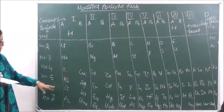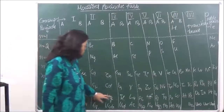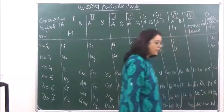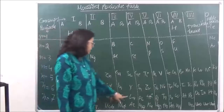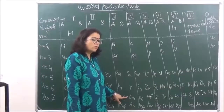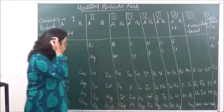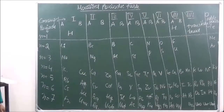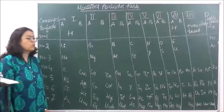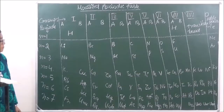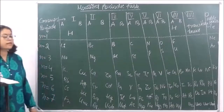The sixth period has 32 elements — 18 in the main table plus 14 f-block elements placed below — and is known as a very long period. The seventh period is not complete; it only goes up to atomic number 92, and although it should also have 32 elements, it has only those up to atomic number 92. This period is also known as a very long period. In total, 118 elements have been discovered.